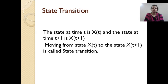Next, state transition. What is meant by state transition? The state at time t is denoted by x(t), and the state at time t+1 is denoted by x(t+1). Moving from state x(t) to x(t+1) is called a state transition.